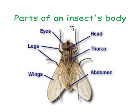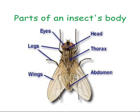On its head, we see the insect's eyes. On the thorax, covering the abdomen, we see its wings. And here we see the legs of the insect.